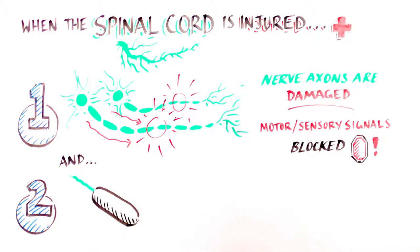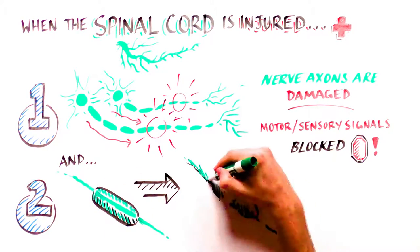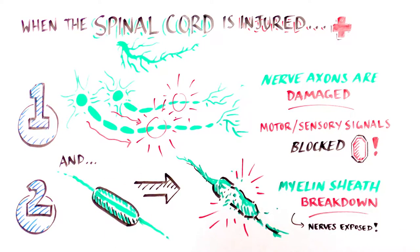And two, the myelin insulation can also break down, leaving the nerves exposed and unable to function normally.